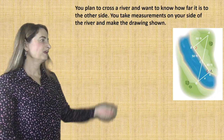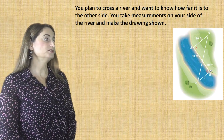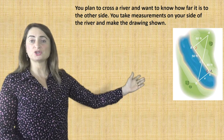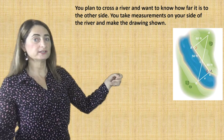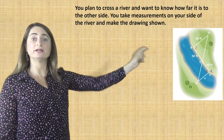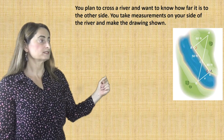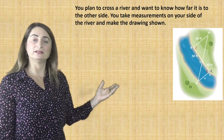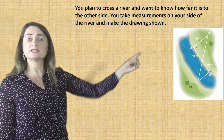Now let's practice with this word problem. You plan to cross a river and want to know how far it is to the other side. You take measurements on your side of the river and make the drawing shown. So you're trying to find how wide the river is — I'm not going to get a measuring tape to measure how wide the river is. Instead, I would draw a similar triangle on the other side where I'm able to find some measurements. This is called indirect measurement. So I will find the width of the river using similar triangles.